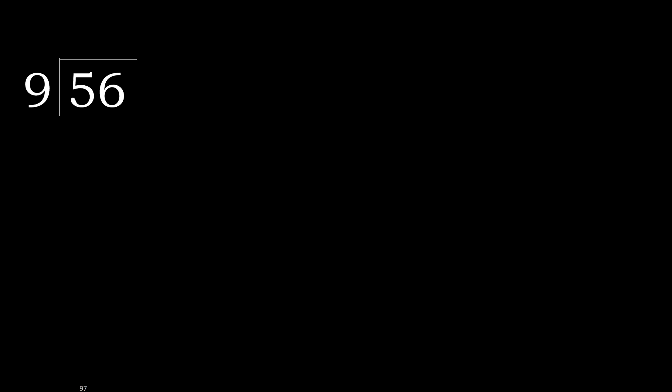56 divided by 9. 5 is less, therefore next. 56 is not less, therefore with 56. 9 multiply by which number is nearest to 56, but not greater.